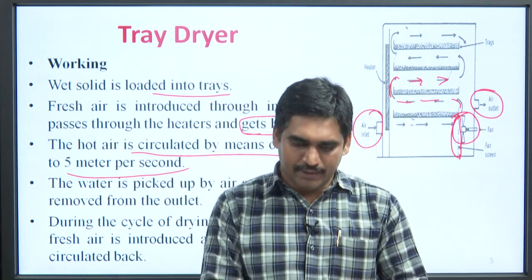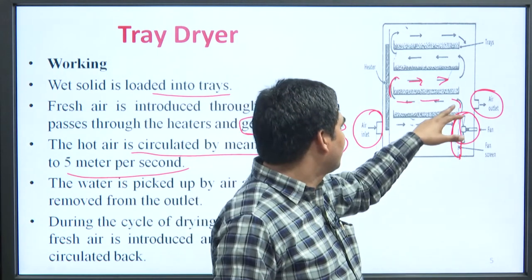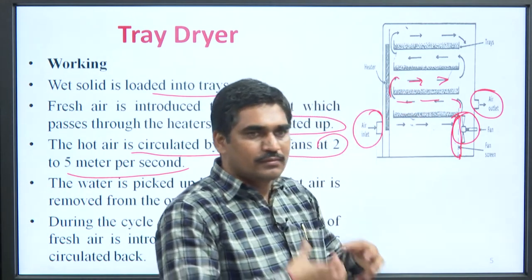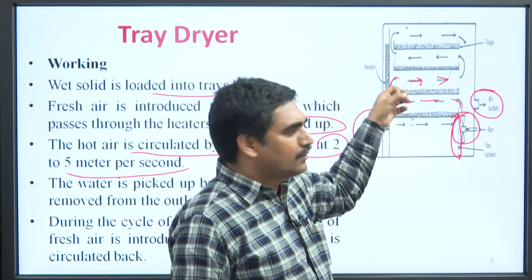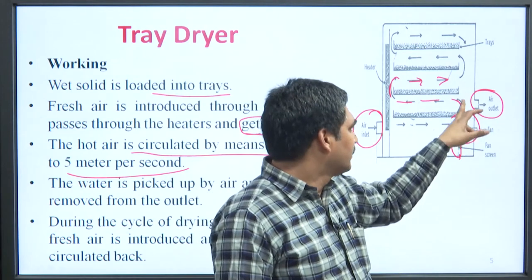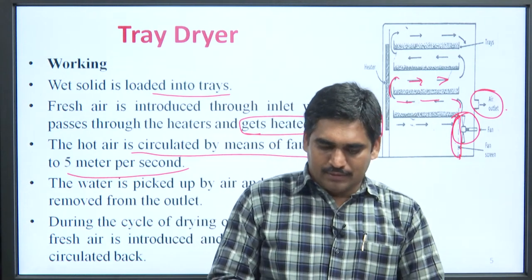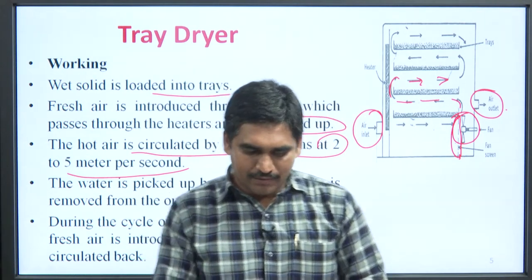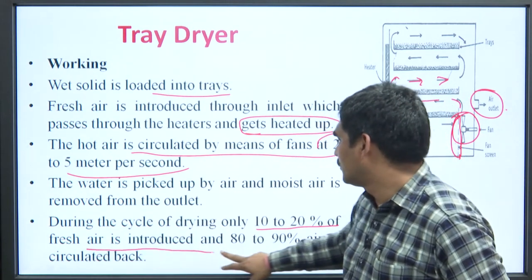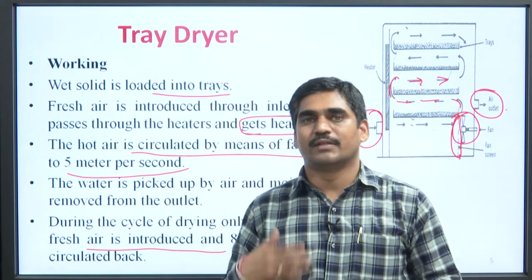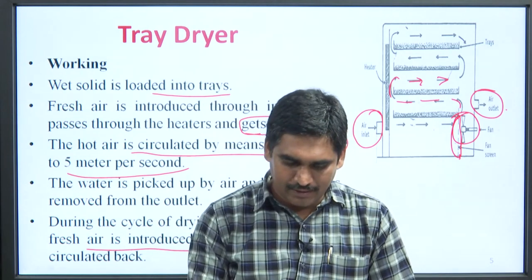Water is picked up by the air, and moist air is removed from the outlet. From the surface of the wet material, water is removed by the hot air, and the moisture is removed through the air outlet. During the drying cycle, only 10 to 20 percent of fresh air is introduced, and 80 to 90 percent of the air is circulated back.